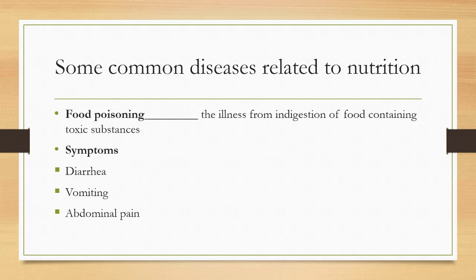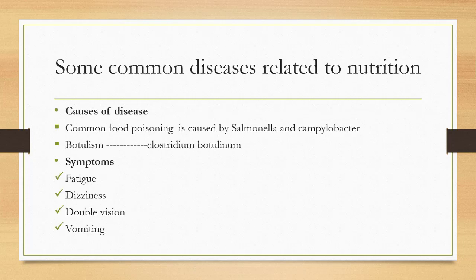The next disease is food poisoning — the illness from ingestion of food containing toxic substances is called food poisoning. Symptoms are diarrhea, vomiting, and abdominal pain. Common food poisoning is caused by bacteria such as Salmonella and related species. These bacteria produce toxins which cause the disease. They live in the intestines of cattle, chickens, and ducks without causing disease in those animals. Humans can develop food poisoning if they drink milk or eat meat or eggs contaminated with these bacteria.